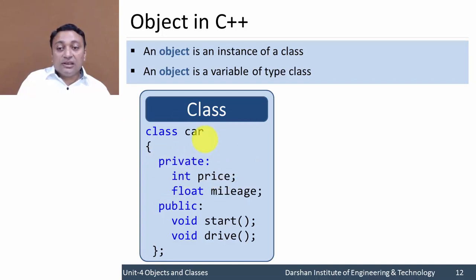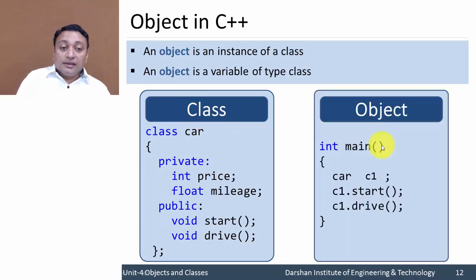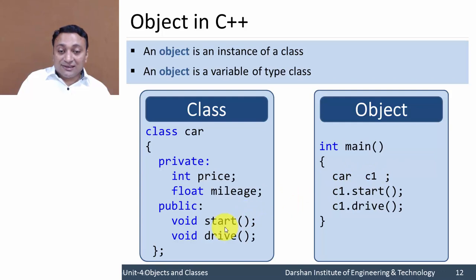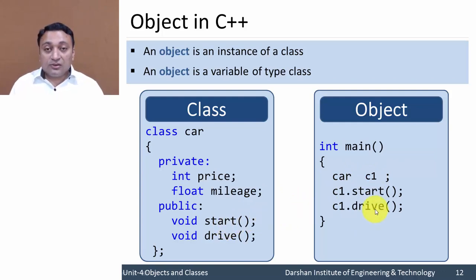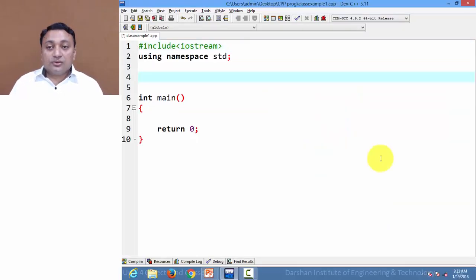In main, we create one variable 'car1' of type 'car'. So using 'car1' we can access its members like start and drive. Let us write code to understand this in detail.